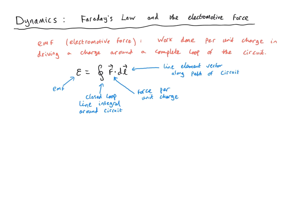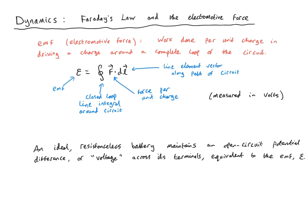A battery converts chemical energy into EMF, and a generator converts mechanical energy into EMF. An ideal, resistanceless battery maintains an open circuit potential difference, or voltage, across its terminals equivalent to the EMF. The resulting electric field in resistanceless wires drives a current around the circuit. However, in dynamics the scalar potential cannot simply be thought of as the electric potential anymore. The electric field is related to both the scalar and vector potential in electrodynamics, so the scalar potential has no direct interpretation as a potential energy. Nevertheless, the EMF does work in driving a charge around a circuit and can be interpreted as a potential difference or voltage.